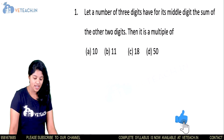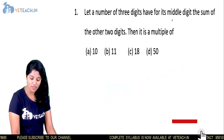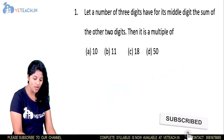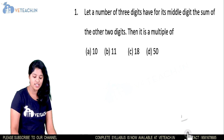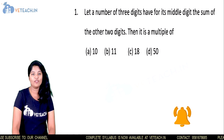See the first question: let a number of three digits have for its middle digit the sum of the other two digits. Then it is a multiple of?